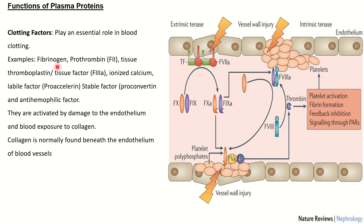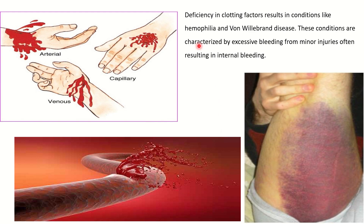Fibrin can only be brought about by clotting factors, so we see that they are of high essence. Looking at this diagram, we have factor 2 — the unactivated form, also called prothrombin — and then the active form called thrombin. All of these factors are of high necessity. If one is deficient in clotting factors, this will result in blood conditions such as hemophilia and von Willebrand disease.